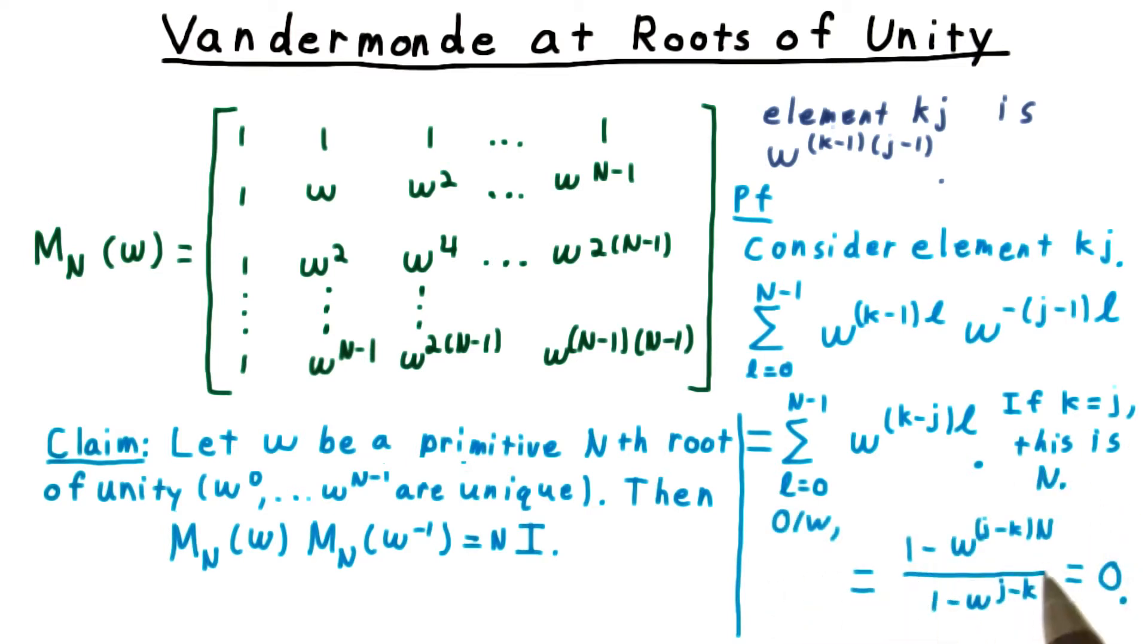Otherwise, we recognize this as a geometric series and rewrite it as this ratio here. Note, however, that omega to the j minus k-th power is a root of unity, and then raising that to the n-th power must necessarily be one.